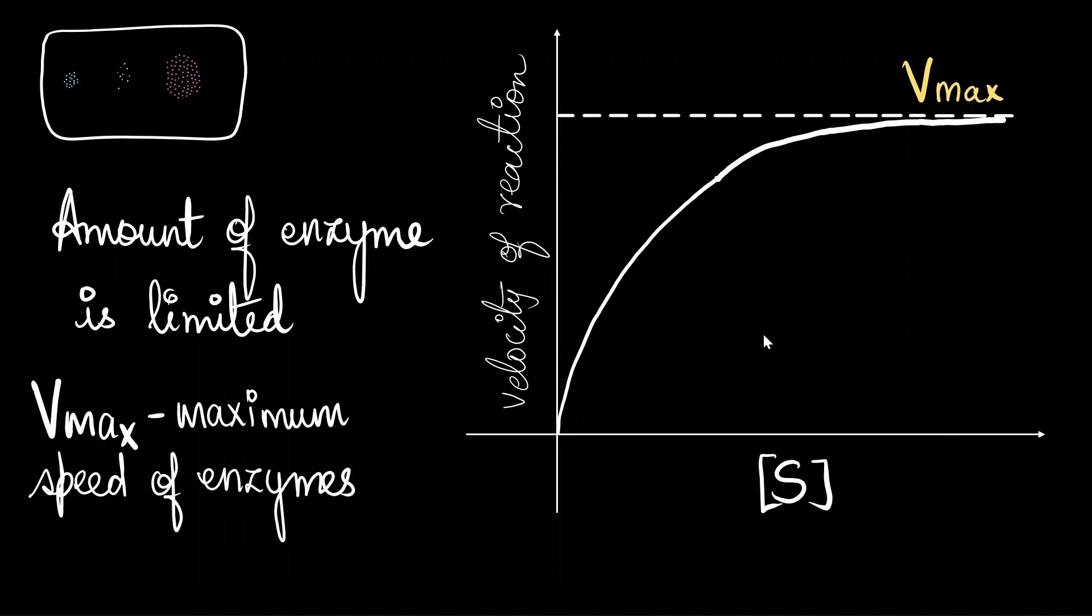Vmax represents the maximum speed at which the enzyme can operate. But to achieve Vmax, we need excess of substrate. So, when you are studying a cell and you realize a certain metabolic pathway is slow, you can compare that speed with the actual speed of the enzyme. And then you can figure out whether the problem is insufficient enzymes, insufficient substrate, or something else.